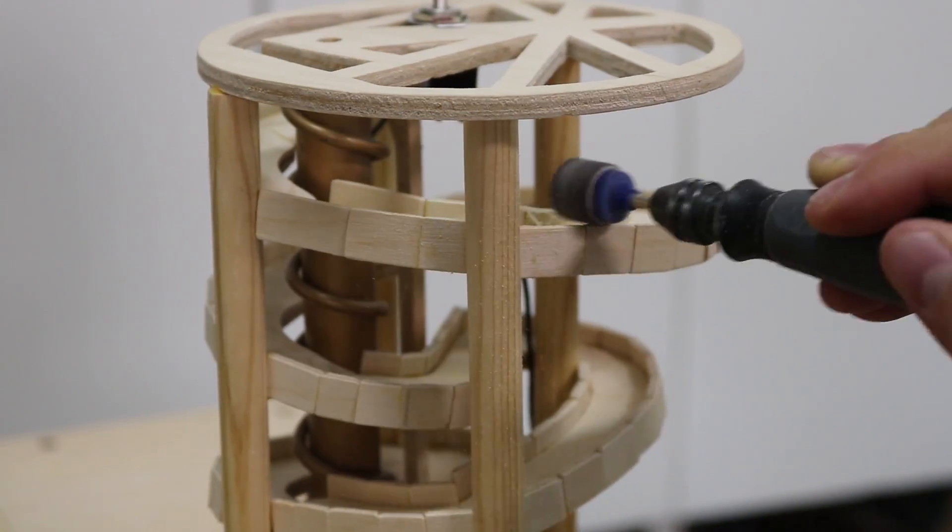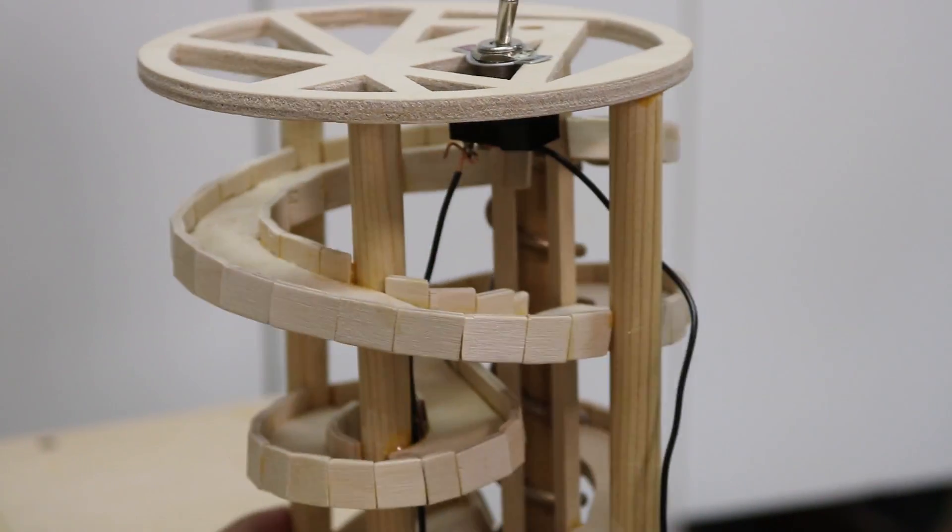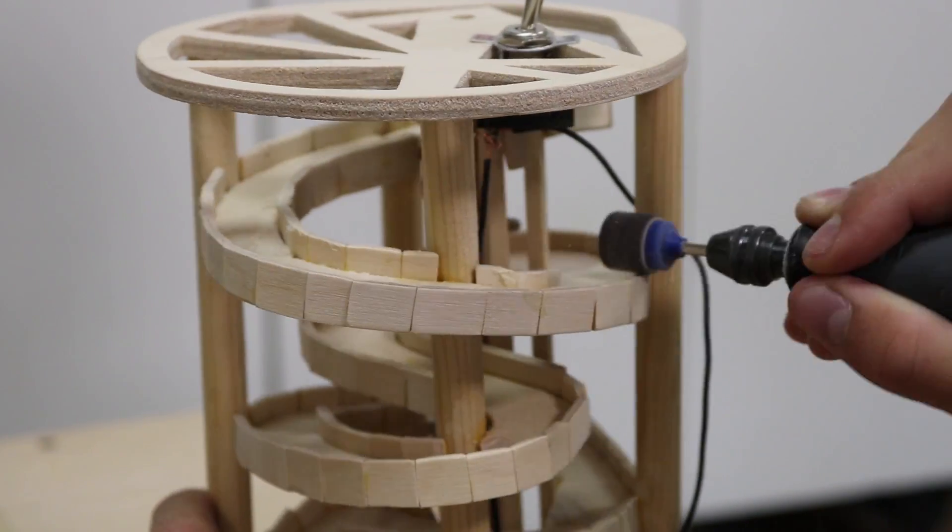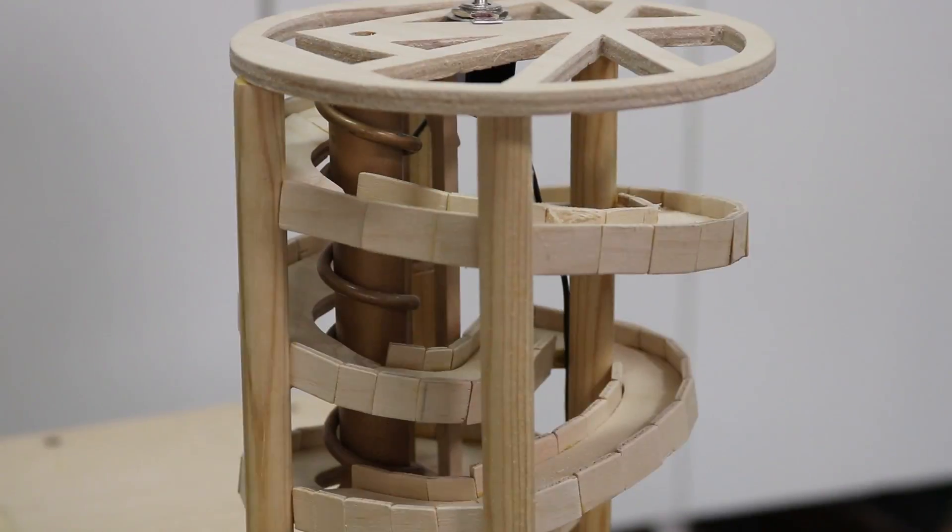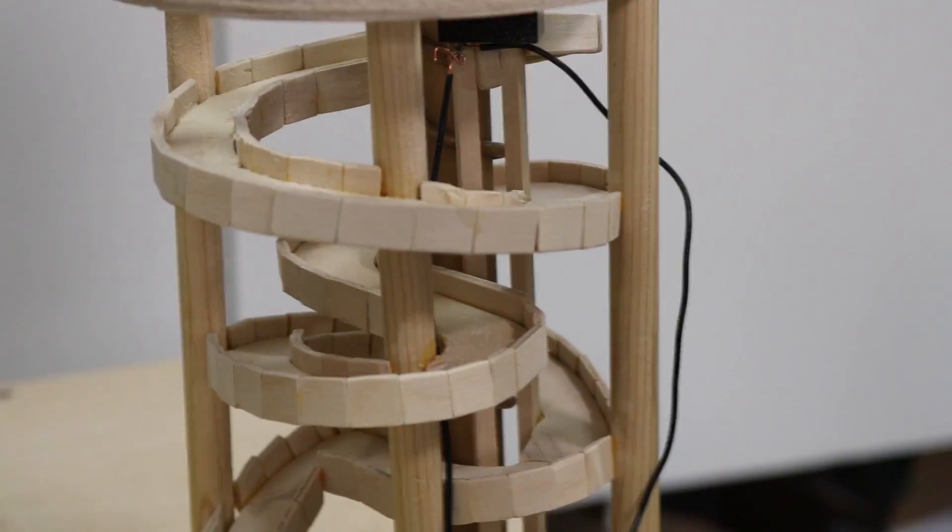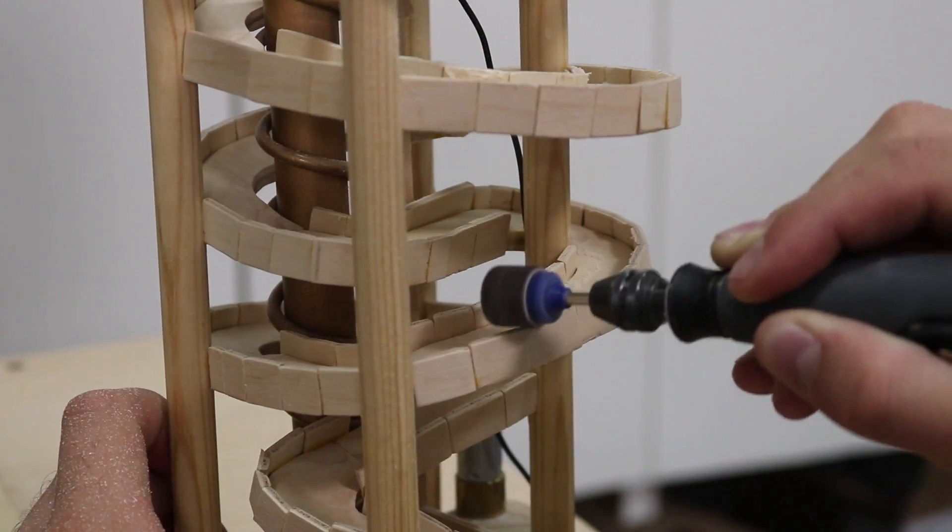When putting on all the track barriers I didn't worry so much about what the top or bottom edge looked like, only focusing on making sure it was high enough to keep the marble on the track. So I started by sanding down all those edges with a Dremel.